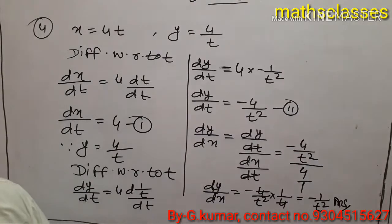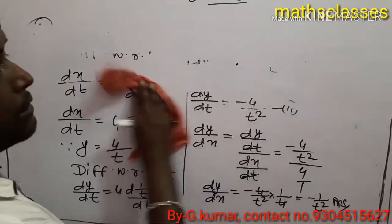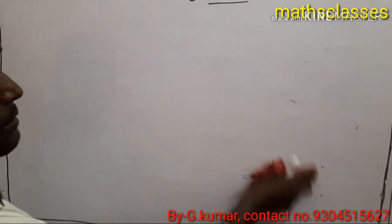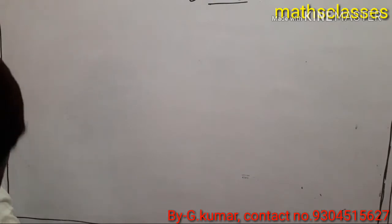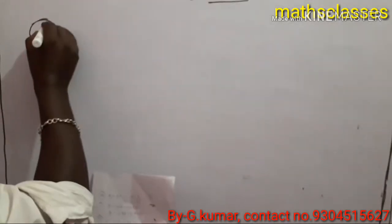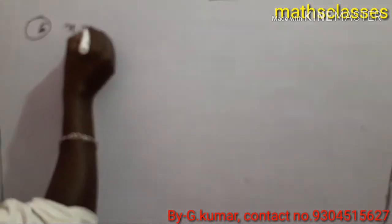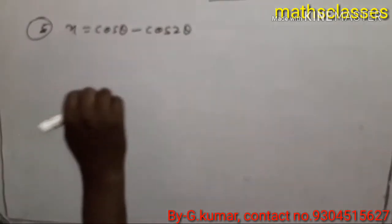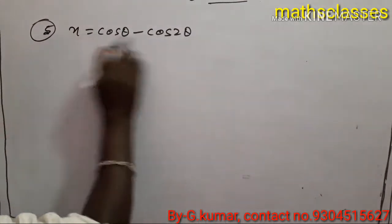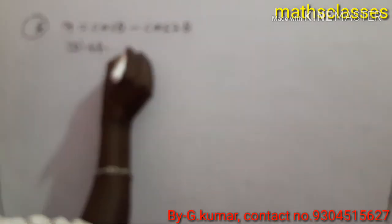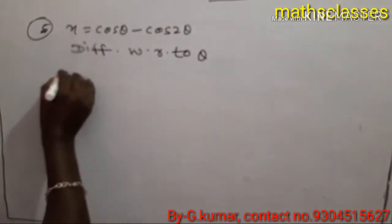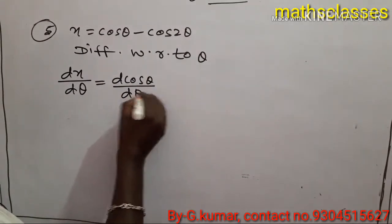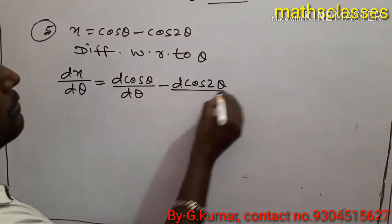Next we do question number 5. Question 5 says x equal to cos theta minus cos 2 theta. Since x is a function of theta, we differentiate with respect to theta. We write dx upon d theta equal to d(cos theta) upon d theta minus d(cos 2 theta) upon d theta.